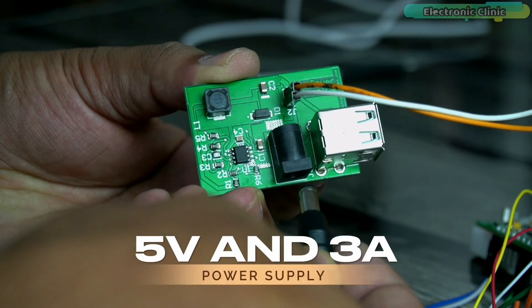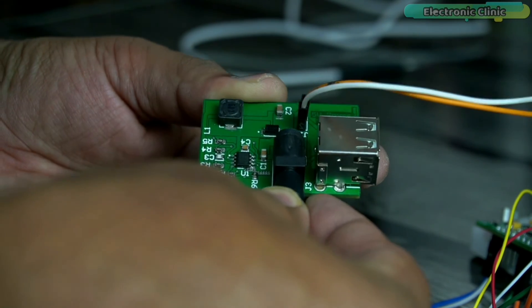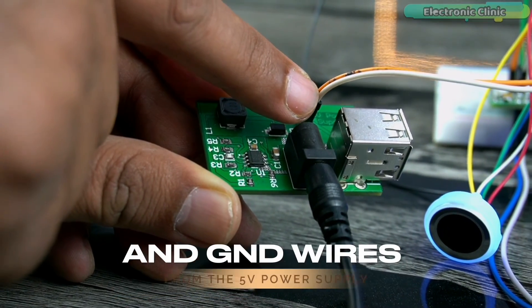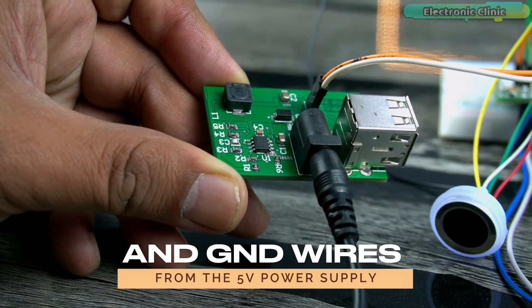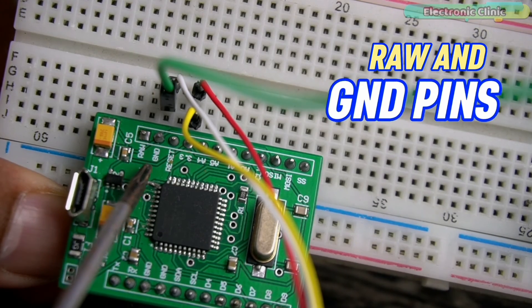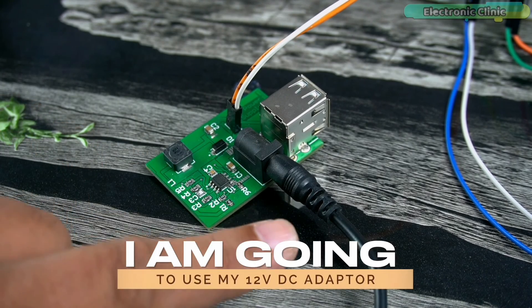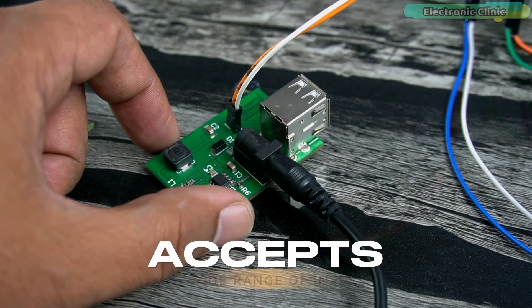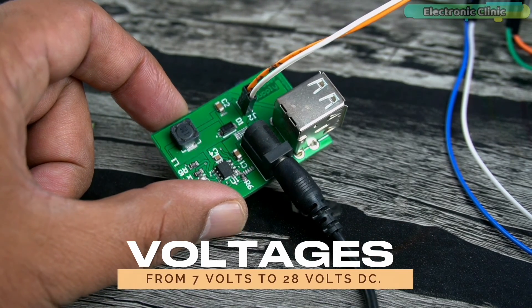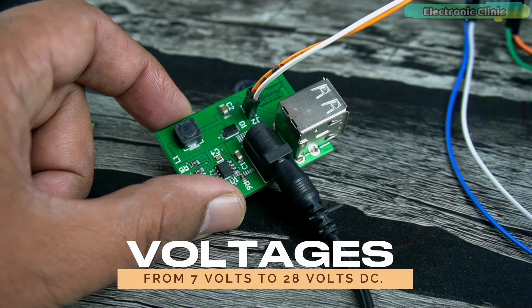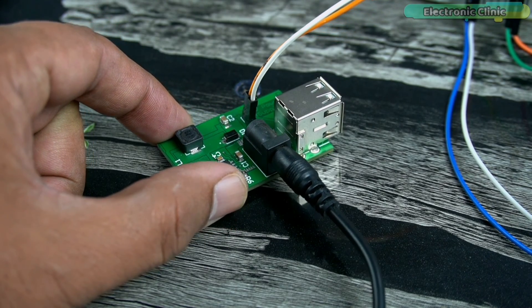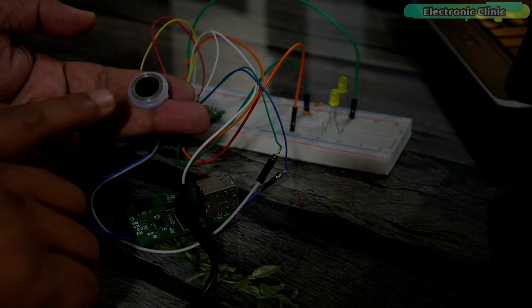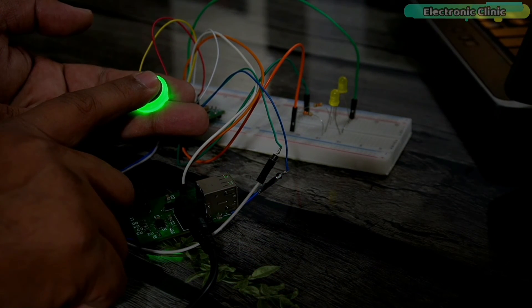Now, I'm going to use my regulated 5-volt and 3-amp power supply to power up all electronics. You can see I have connected the 5-volt and ground wires from the 5-volt power supply to the Arduino Pro Micro raw and ground pins. I'm going to use my 12-volt DC adapter. This 5-volt and 3-amp power supply accepts a wide range of input voltages from 7 volts to 28 volts DC. So, you can use any voltage source, just make sure it doesn't exceed 28 volts.